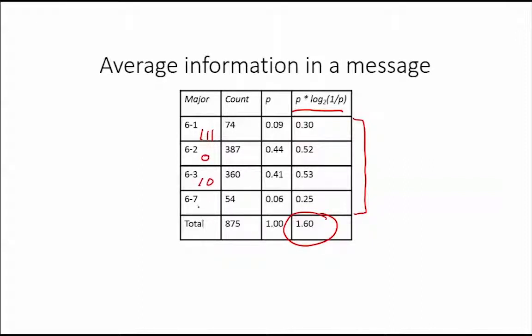This means that the average bits per major is 3 times 0.09 plus 1 times 0.44 plus 2 times 0.41 plus 3 times 0.06, which equals 0.27 plus 0.44 plus 0.82 plus 0.18, which equals 1.71.